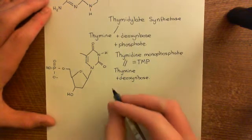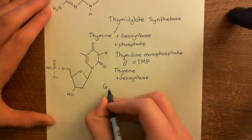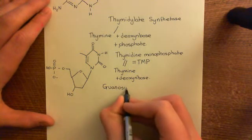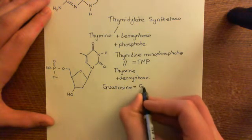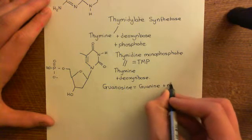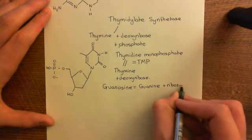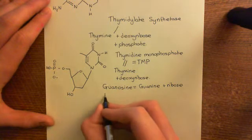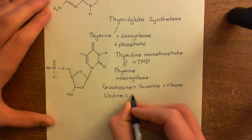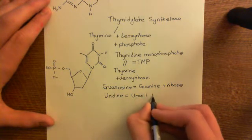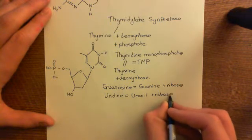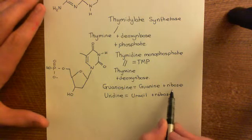The reason it's confusing is that if you look at all the other organic bases — for instance, guanosine means guanine plus ribose. Similarly, uridine means uracil plus ribose. All of these names refer to organic bases plus ribose.